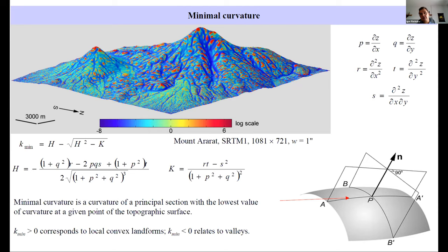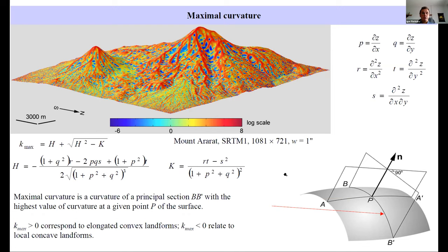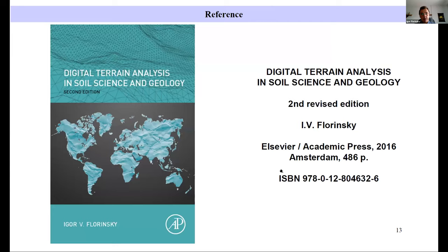Positive values of minimal curvature corresponds to local convex landforms, while negative values relate to valleys. Maximal curvature is a curvature of a principal section with the highest value at a given point. Positive values correspond to elongated convex landforms, while negative values relate to local concave landforms. This is a very brief description of four key land surface topographic features. All details can be found in this second revision of my book.